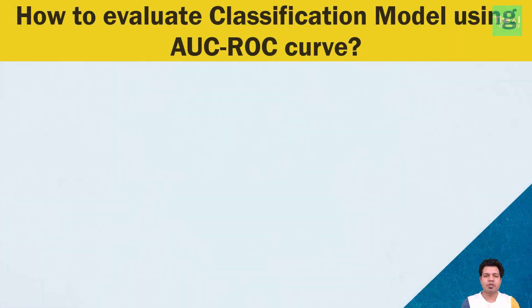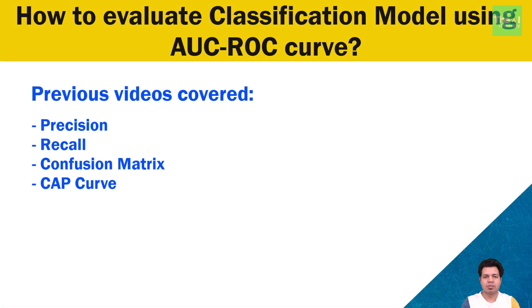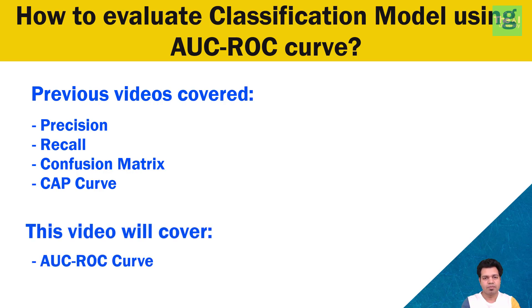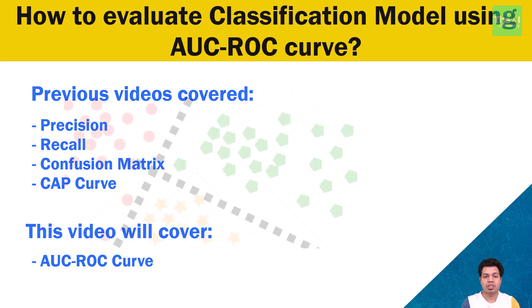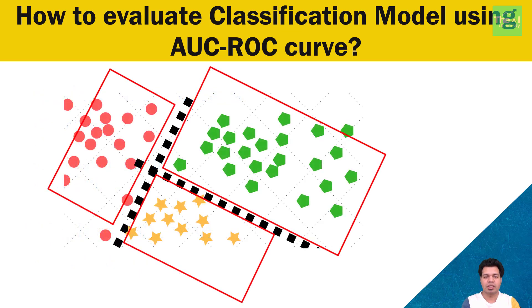In the previous video, I covered various other classification model evaluation techniques like precision, recall, confusion matrix, as well as the CAP curve. Here, I will cover AUC-ROC curve. AUC-ROC curve is a classification model performance measurement metric which tells us how much a classification model is capable of distinguishing between the classes.